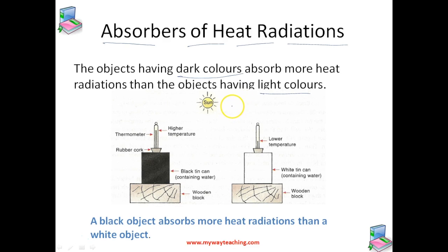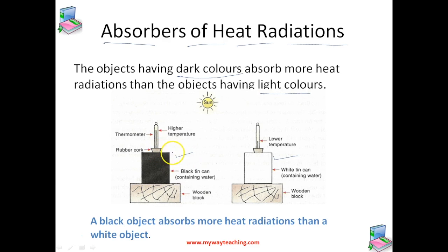We will now perform an activity to understand this in a better way. We take a black painted tin can as an example of a dark colored object, as you can see here, and a white painted tin can as an example of a light colored object — both of the same size. They are placed on wooden blocks separately, and the initial temperatures of the water inside both cans are noted, which are exactly equal.